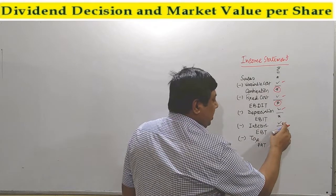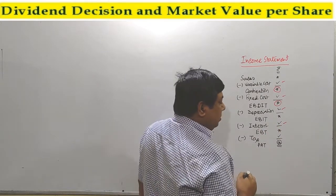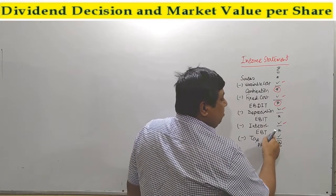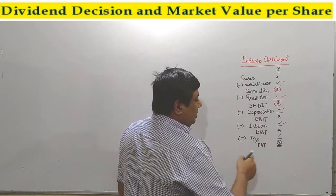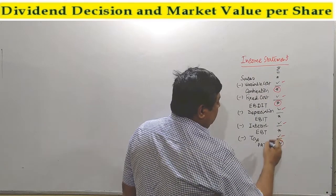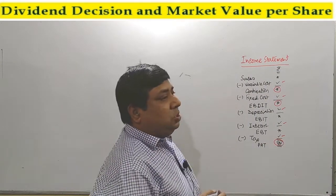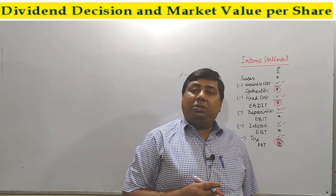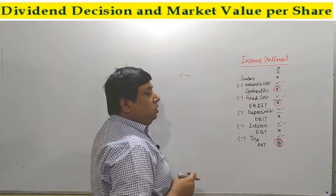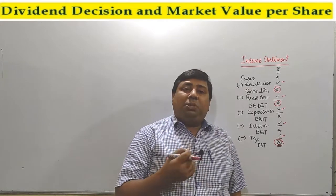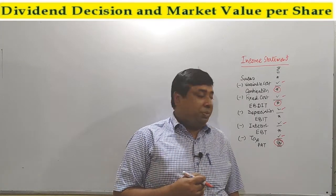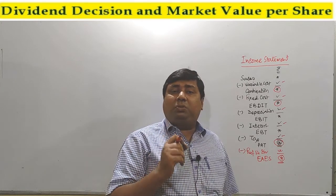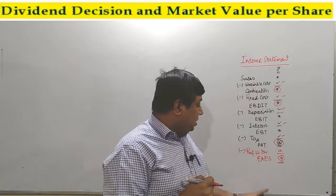We got EBIT. Next we pay interest to the debt shareholders or other loans. Then we got EBT, that is Earnings Before Tax. Finally we pay tax, and the final amount we got is PAT. That PAT is basically considered as the amount of profit which is available to the shareholders. From PAT, we also pay preference shareholders' dividend.